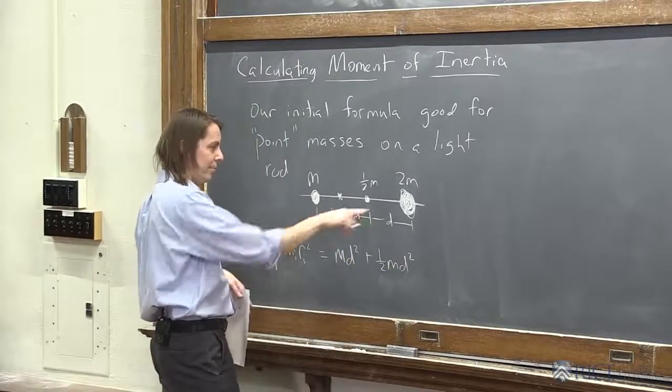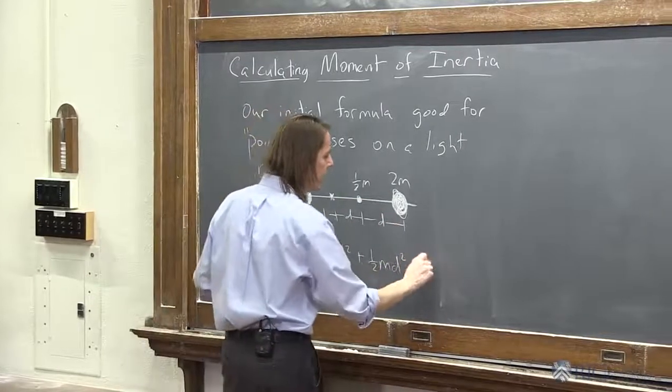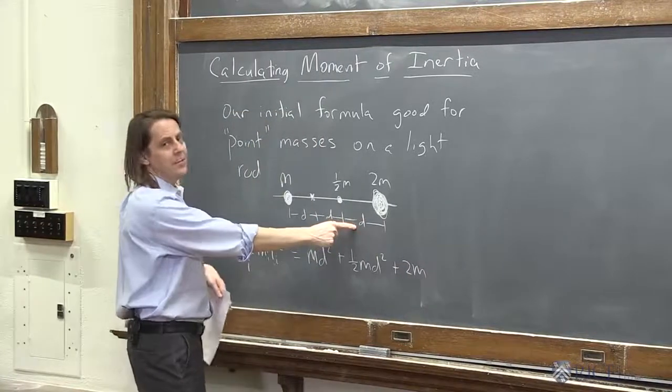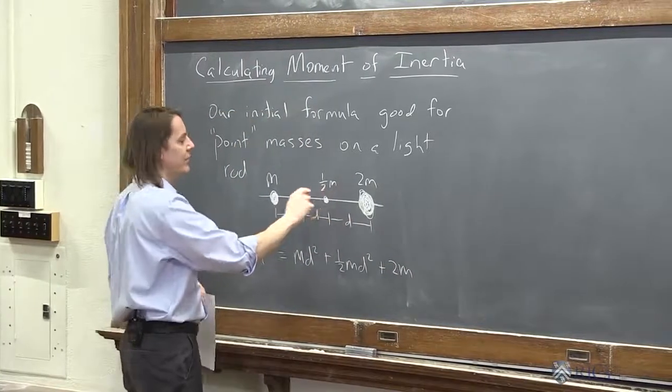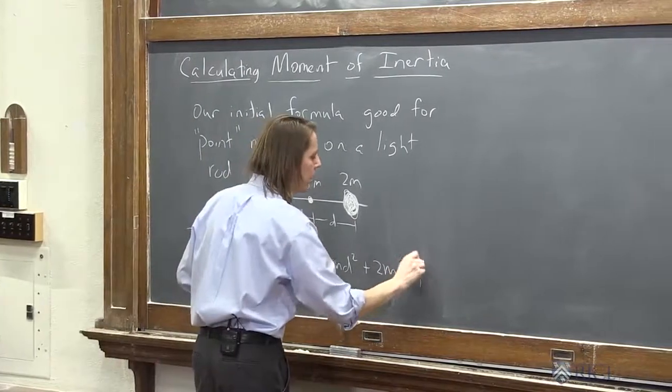All right. And then now we're doing the sum, i equals 3. The third one is plus 2m, and now we need its d squared, but notice it's actually at 2d, right? The distance is the distance from the axis that matters. So 2d squared.